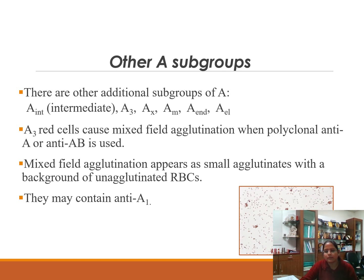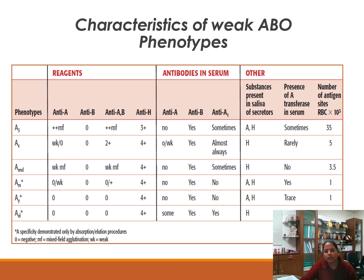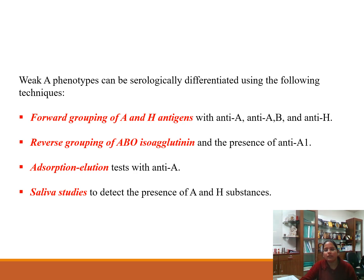In the weak A subgroups, forward grouping shows zero to mixed field reactions with anti-A and anti-AB antisera; some show no reaction at all. However, with anti-H, all show a good 3-plus or 4-plus agglutination. Anti-B is present in the serum of all subgroups, while anti-A1 is seen in a few, and anti-A is hardly present except in a couple of groups with very weak expression.